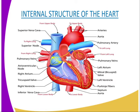A thick muscular wall called the septum separates the left half of the heart from the right half. This prevents the mixing of oxygenated and deoxygenated blood. The thicker wall of the left ventricle enables it to generate the high pressure required to take blood to the distant body tissues.